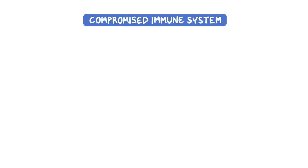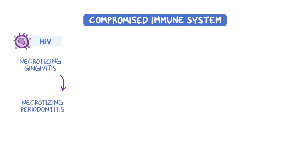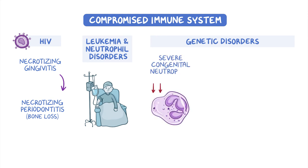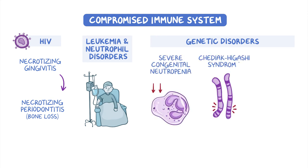Conditions that compromise the host's immune system also increase the risk of periodontitis. HIV-positive individuals can develop necrotizing gingivitis and the more severe necrotizing periodontitis, which is characterized by rapid bone loss. Periodontitis can also occur in individuals with leukemia and neutrophil disorders, both of which compromise the effectiveness of the immune system. Genetic disorders that affect the immune system or connective tissue development — including severe congenital neutropenia, Chediak-Higashi syndrome, and Down syndrome — can also increase the risk of periodontitis.